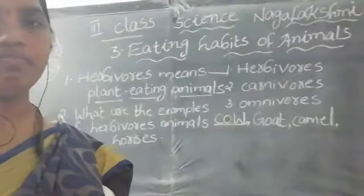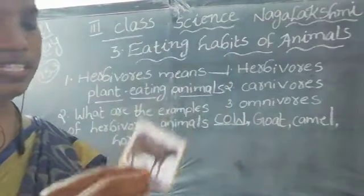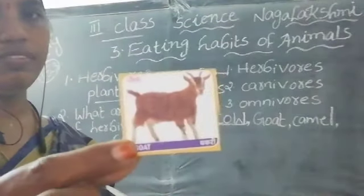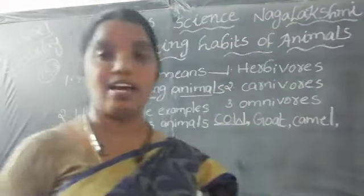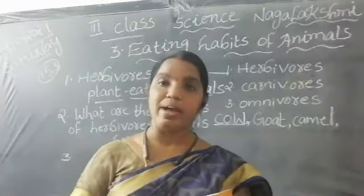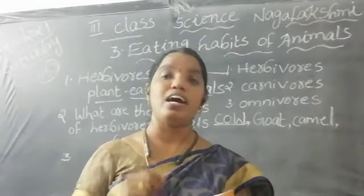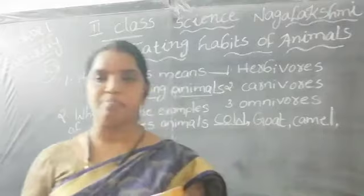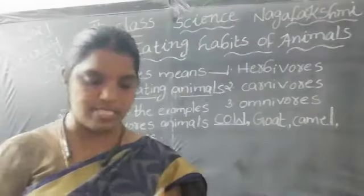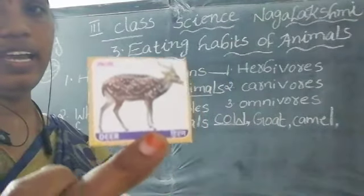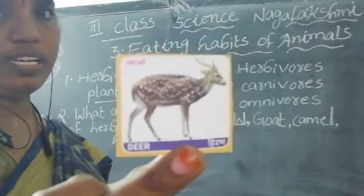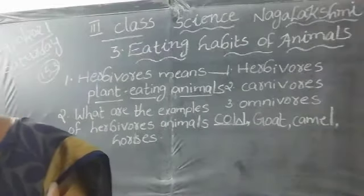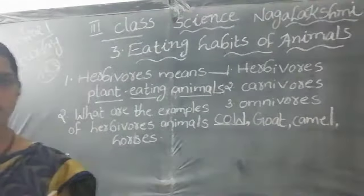These are herbivorous animals. Herbivorous animals means only grass and plant-eating animals. Buffalo is also one of the herbivorous animals. Next: goat. These pictures are very useful to remind you of what herbivorous animals are. Next: deer. These are some of the examples of herbivorous animals.